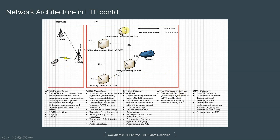The Home Subscription Server (HSS) stores subscription data, authentication keys, credentials, QoS profile, and APN profile. APN stands for Access Point Name, and it defines P-Gateway selection. The HSS also stores the address of the currently serving MME and tracking area — so it keeps track of which MME a given subscriber is connected to and their tracking area.